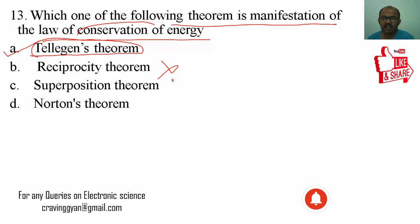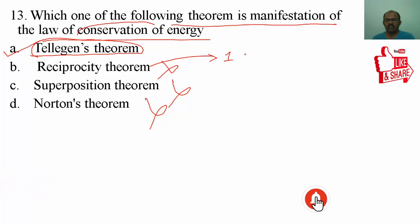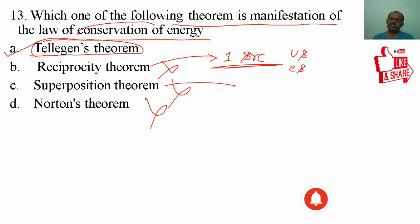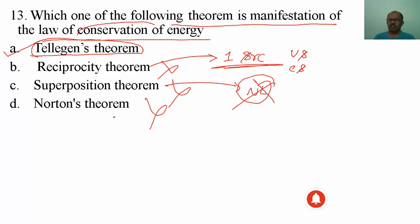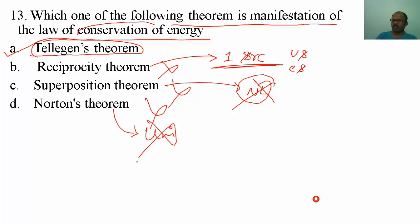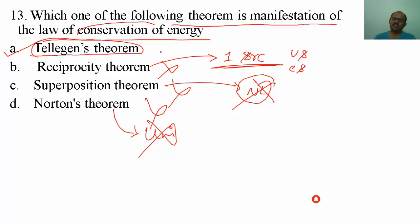Reciprocity theorem is not applicable here. Superposition theorem is not applicable. Norton's theorem is not applicable. Reciprocity theorem is applicable only if you are having a single source — either a voltage source or a current source, but only one. Superposition theorem is not applicable if you are having any non-linearities. So the only theorem that talks about the law of conservation of energy is Tellegen's theorem, and option number one is correct.